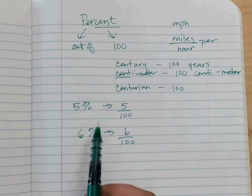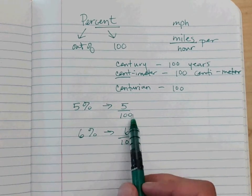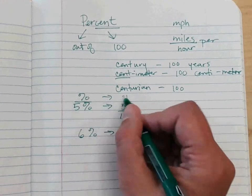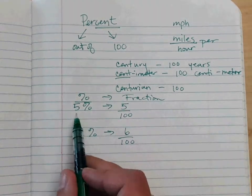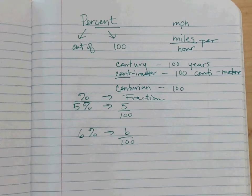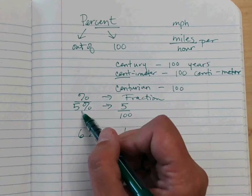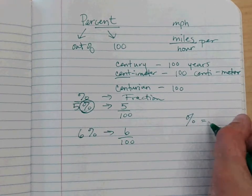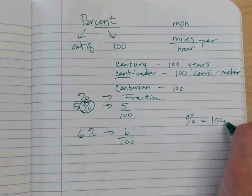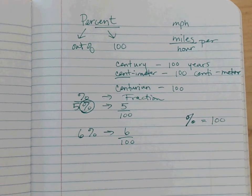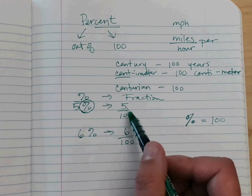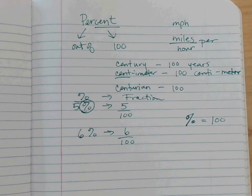To convert a percent to a fraction, you always put it over 100. You can actually see the 100 in the percent symbol — there's a one and two zeros. Percent compares everything out of a hundred, and once you've made a percent into a fraction you can also reduce that fraction.